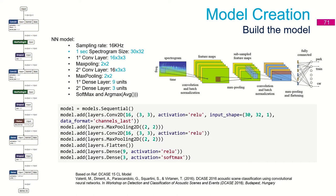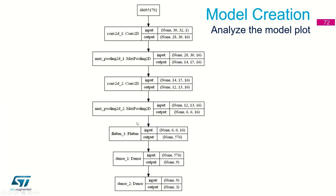The first layer is a convolutional 2D layer. The second layer is max pooling. Then again convolutional 2D, max pooling. Then we flatten the data to fit the dense layer. Next is the definition of the dense layer — the brain of our neural network. The output layer consists of three elements because we have three classes: indoor, outdoor, and in-vehicle. This graphical and Python-generated representation show the same neural network structure.